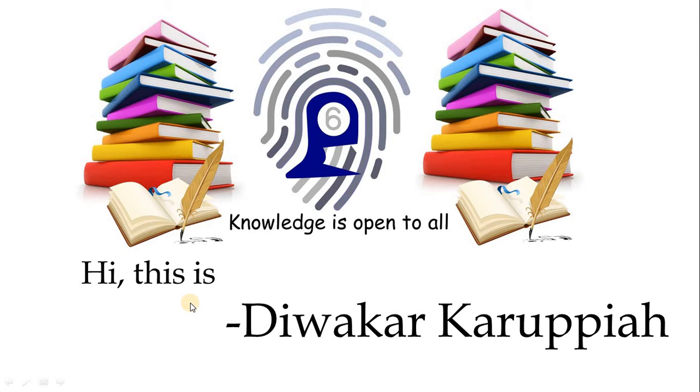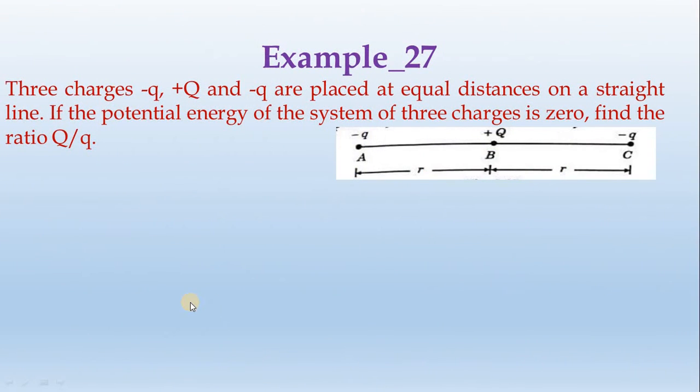Hi, this is Divakar Karupaiya. Example number 27. Three charges: minus q, plus Q and minus q are placed at equal distances on a straight line. If the potential energy of the system of three charges is zero, find the ratio of capital Q divided by small q.